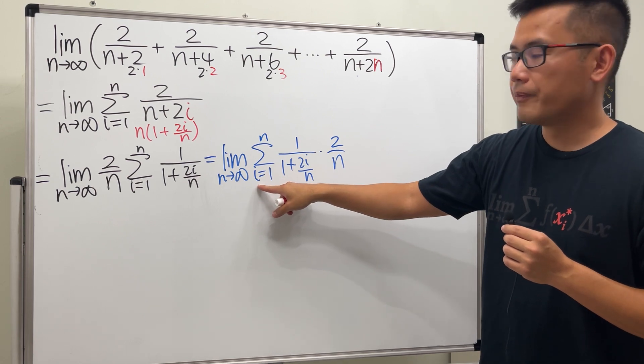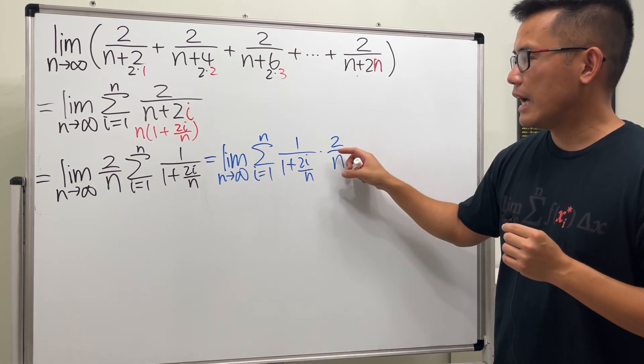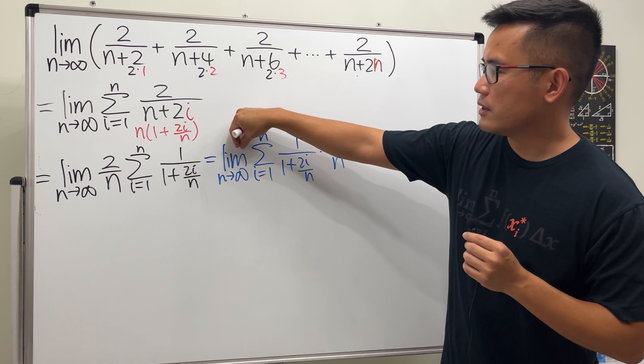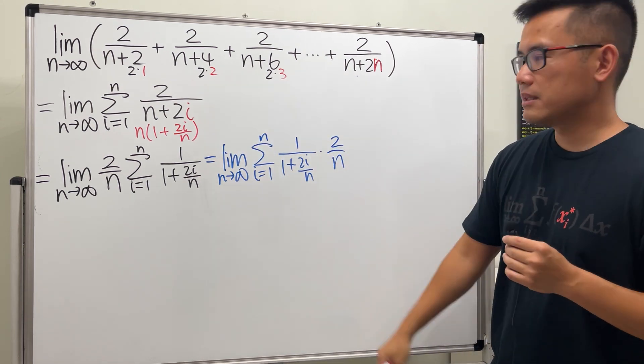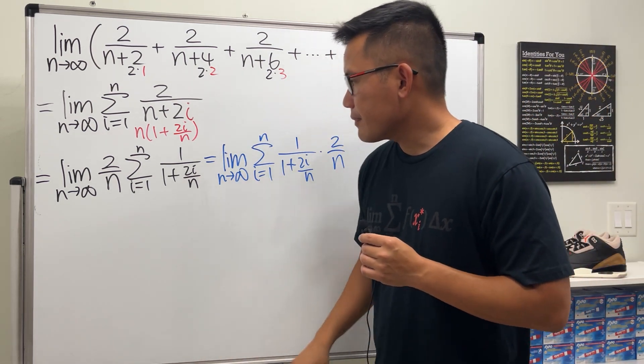But you should know that they are the same. It's because in this summation, i is the running index. So if a term does not have the i, it can be brought to the front of the sigma or the inside. It doesn't matter.